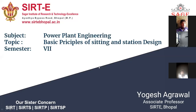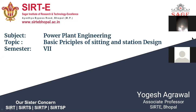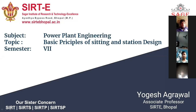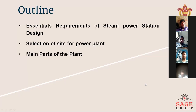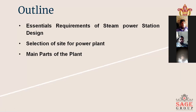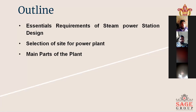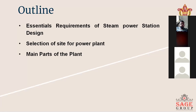Today I will discuss the basic principle of siting and station design. This is the topic of power plant engineering. The outline covers the essential requirements of the steam power station design, second is the selection of site for the power plant, and third is the main parts of the plant.